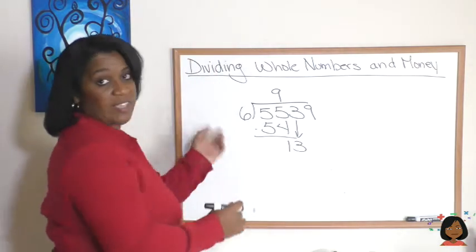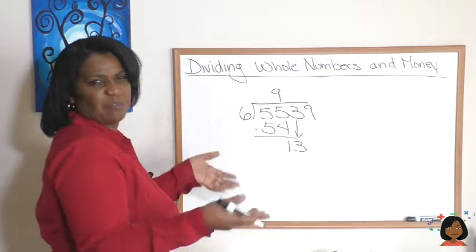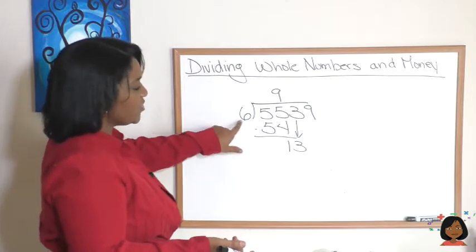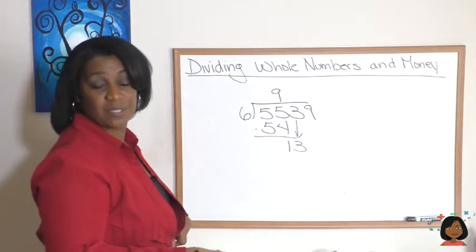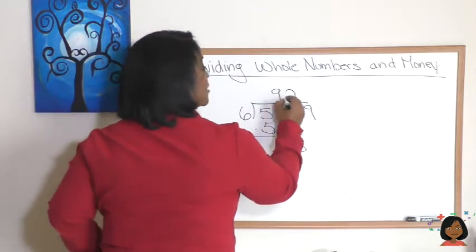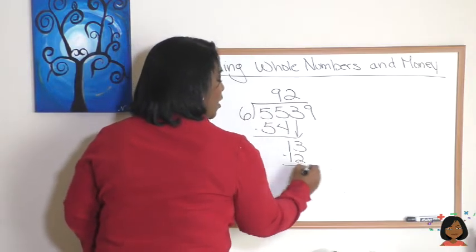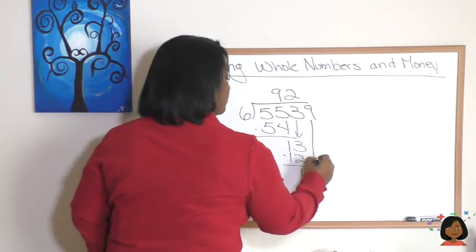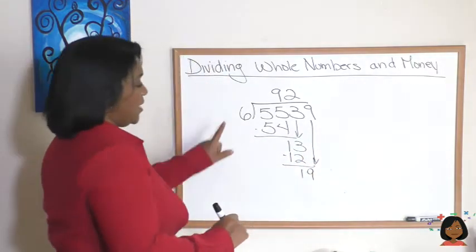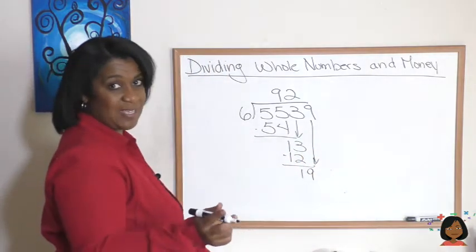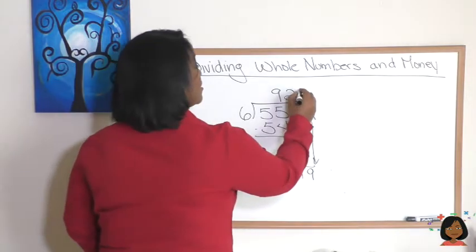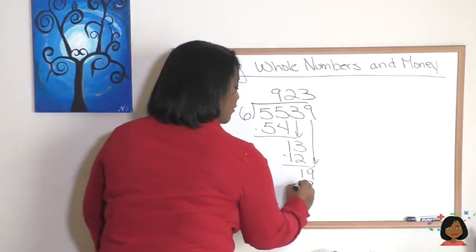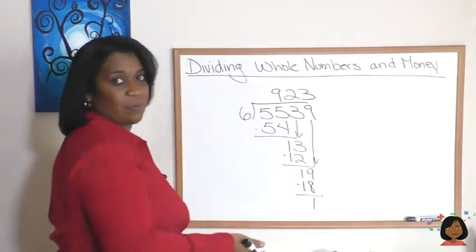Some people draw the arrow. Some people don't. I'm just drawing it for you today so you can see. Six goes into 13 how many times? It goes in twice. 6 times 2 is 12. We have 1 left over. Let's bring down our 9. Now we have 19. Six goes into 19 how many times? Three times with 1 left over. And we're done. There's nothing else to bring down.